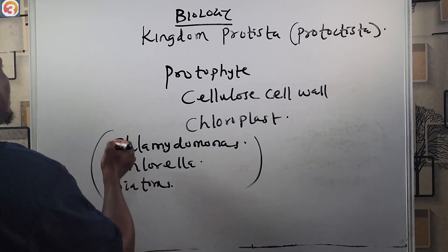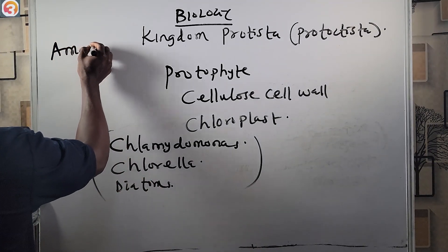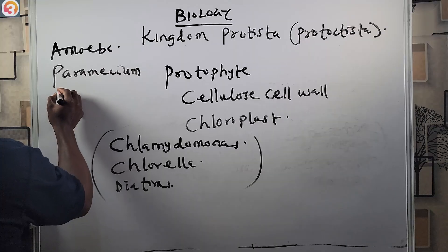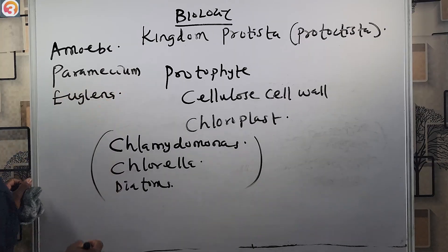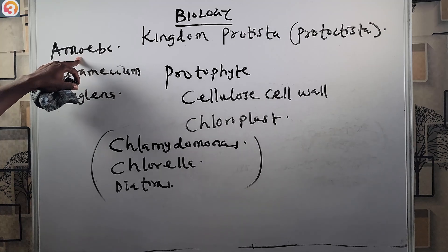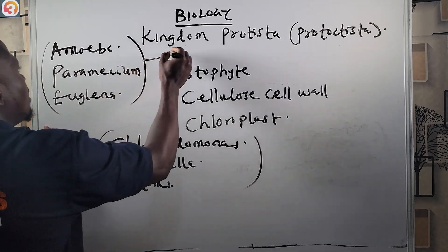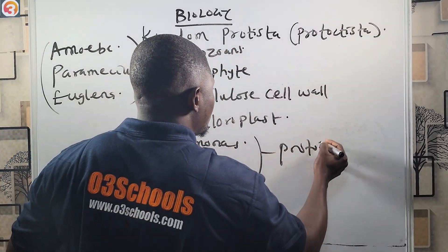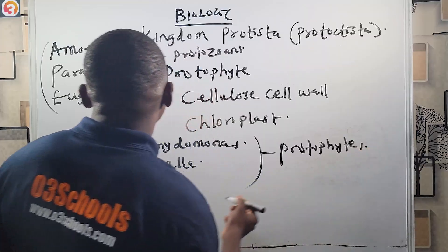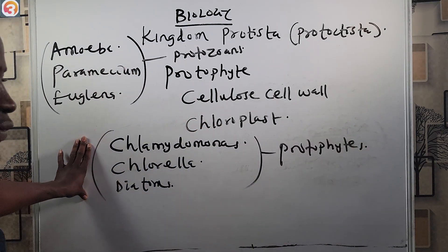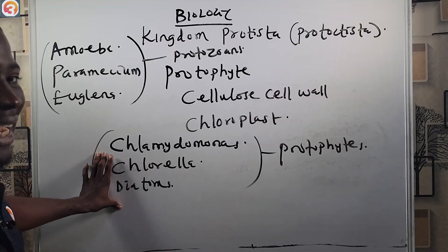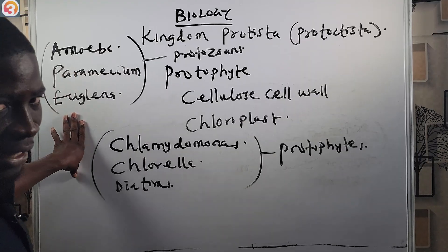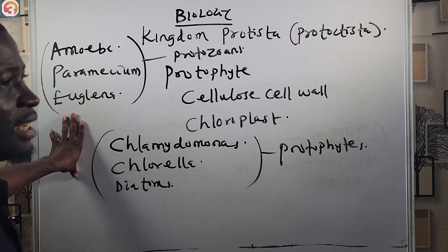Examples of protozoans include Amoeba, Paramecium, and Euglena. So to recap: Chlamydomonas, Chlorella, and diatoms are examples of protophytes, while Amoeba, Paramecium, and Euglena are examples of protozoans.